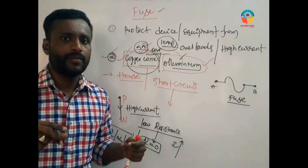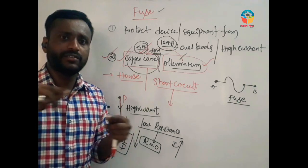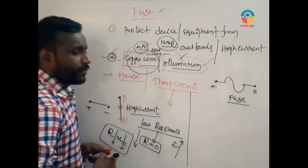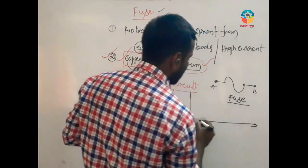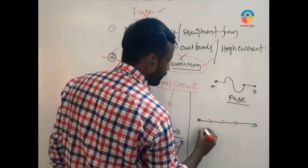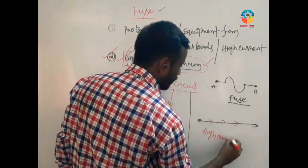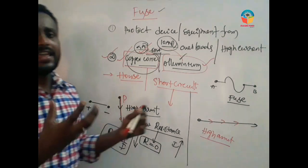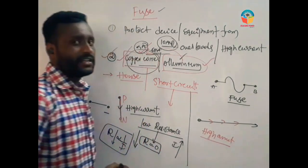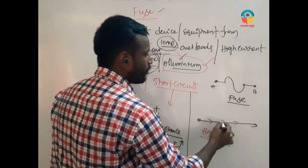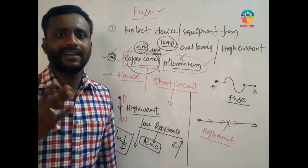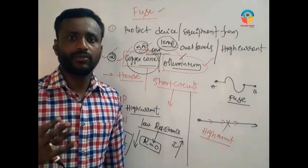The fuse is made from copper wire. When a high amount of current passes through it, a high amount of heat is produced. This high amount of heat produces a high amount of temperature. Whenever the temperature rises to the melting point, the fuse melts. The melting point is the high temperature at which the material changes state.